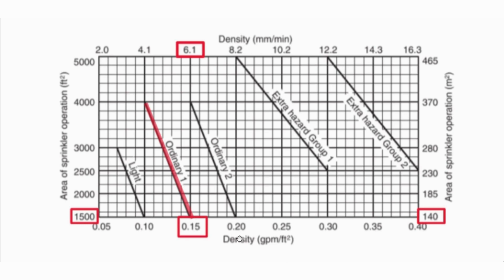For extra hazard groups, the area of sprinkler operation shown on the y-axis is 2500 square feet. In summary, when performing hydraulic calculations we consider the area of sprinkler operation, design the sprinklers within that area, and run our calculations to determine the head requirements.